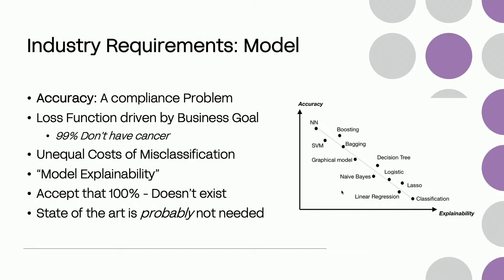The loss function and optimization are always driven by a business goal. What is the cost of sending someone home who might have cancer but wasn't detected? What is the cost of a false positive spam email? You have unequal costs of misclassification. Model explainability is also very important — sometimes being able to explain what your model does is worth at least as much as knowing how good it is. In general, state-of-the-art is probably not needed.